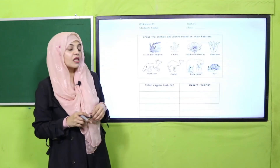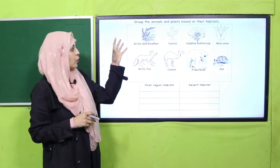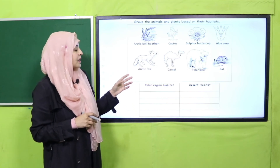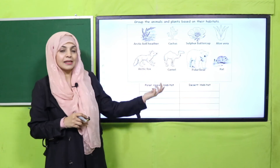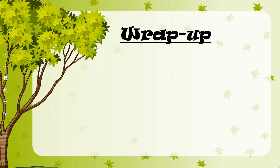Now we will move forward towards your worksheet. This will be provided to you by your teacher. Write down your name and your class. Aapko group diya gaya hai - kuch animals aur plants hain. Inko aapko batana hai ke kaun se animals aur plants polar region mein aate hain aur kaun se desert habitat mein aate hain. You have to separate them out. Let me do one or two for you: Arctic heather will come under polar region, and cactus will come under desert habitat. This is how you will do the rest of the worksheet.